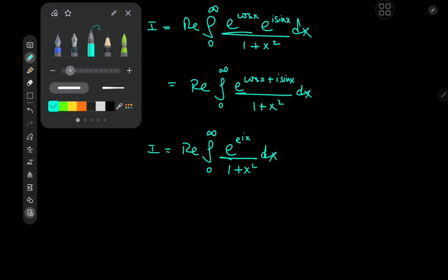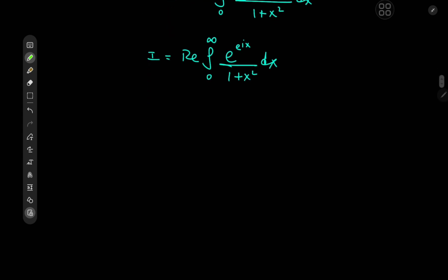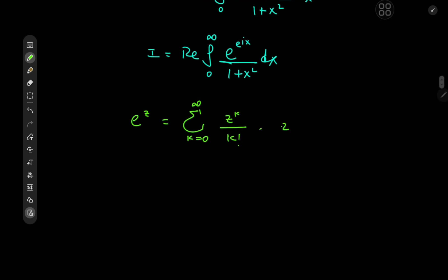And now what? Well, the exponential function has a really useful series expansion. We know that e to the z can be expanded as the sum over k from zero to infinity of z to the k divided by k factorial. So in our case we just replace z by e to the ix and get e to the e to the ix equal to the sum over k from zero to infinity of e to the i·k·x divided by k factorial.